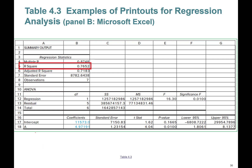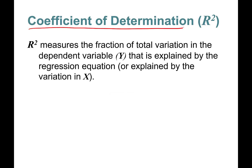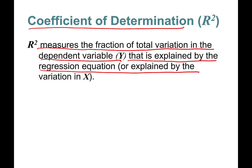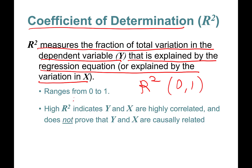Next we will talk about R-squared. The coefficient of determination R-squared measures the fraction of the total variation in the dependent variable Y that is explained by the regression equation, or equivalently by the variation in X. R-squared takes values between 0 and 1. A high R-squared indicates that Y and X are highly correlated in a single-variable regression model.